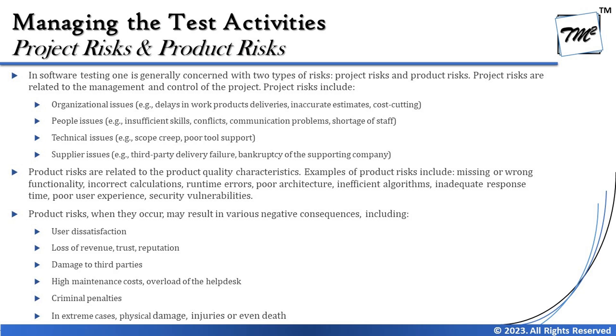Project risks are related to the management and control of the project. Project risk examples include: organizational issues like delay in work product deliveries, inaccurate estimates, and cost cutting; people issues like insufficient skills, conflicts, communication problems, and shortage of staff; technical issues like scope creep and poor tool support; and supplier issues such as third-party delivery failure or bankruptcy of a supporting company. Any risk related to these activities that build the product is what we refer to as project risk.